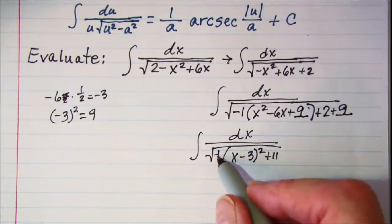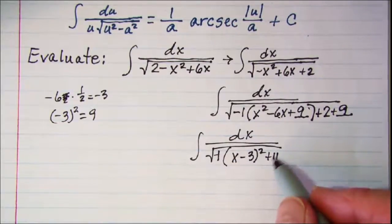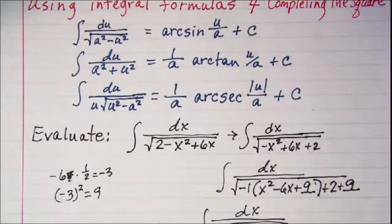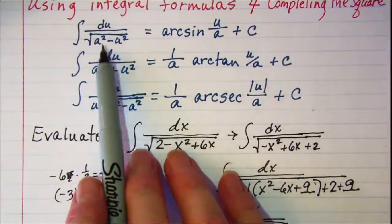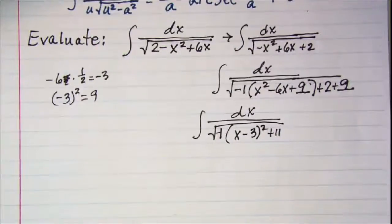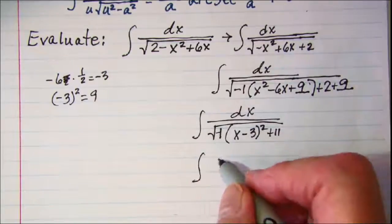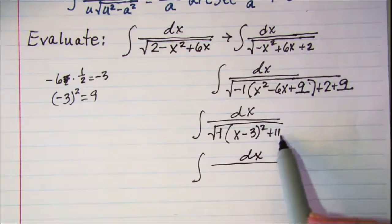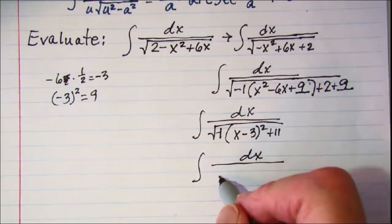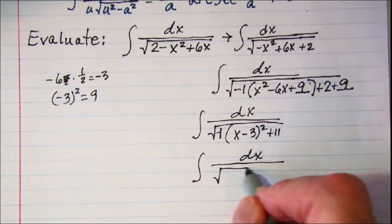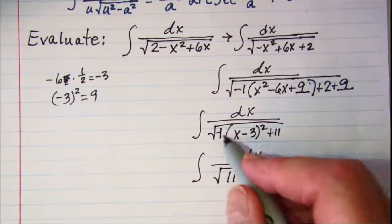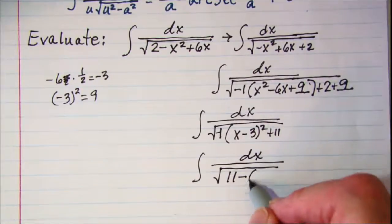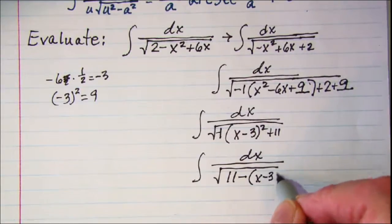So in order to make this look like one of our formulas I need to put my constant in front, so I have the integral of dx and then my 11 is going to be in front here and then minus x minus 3 quantity squared.